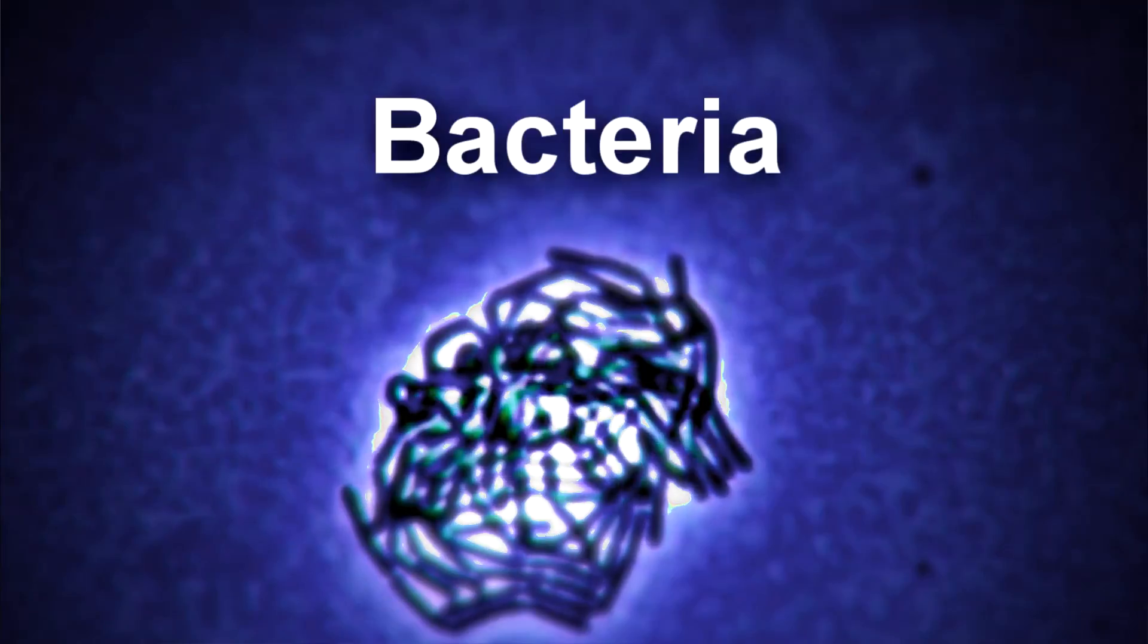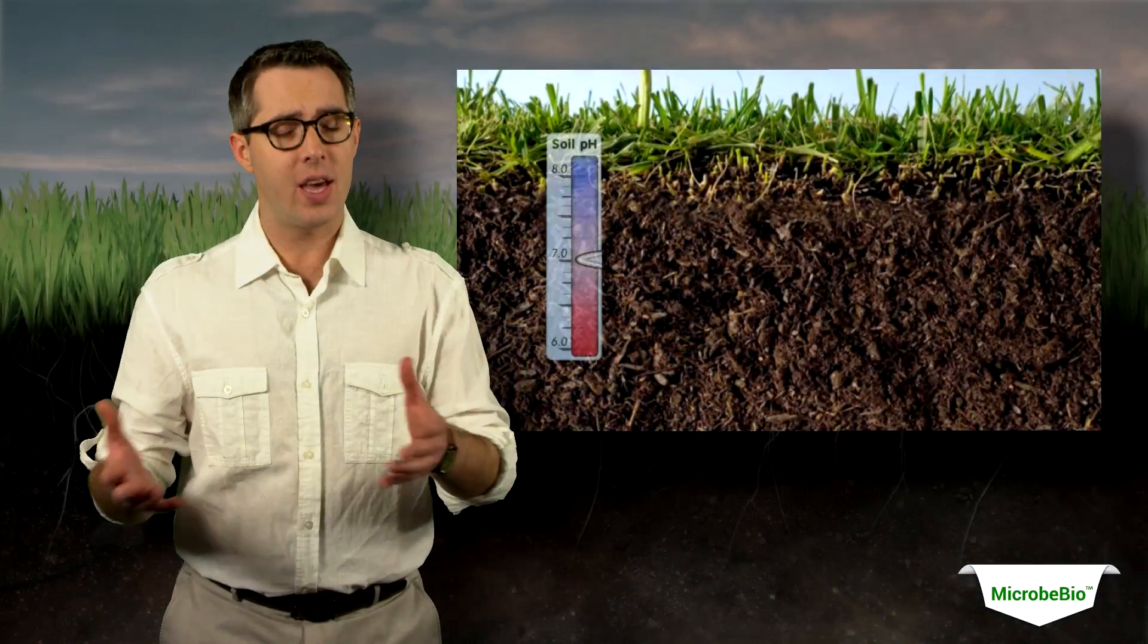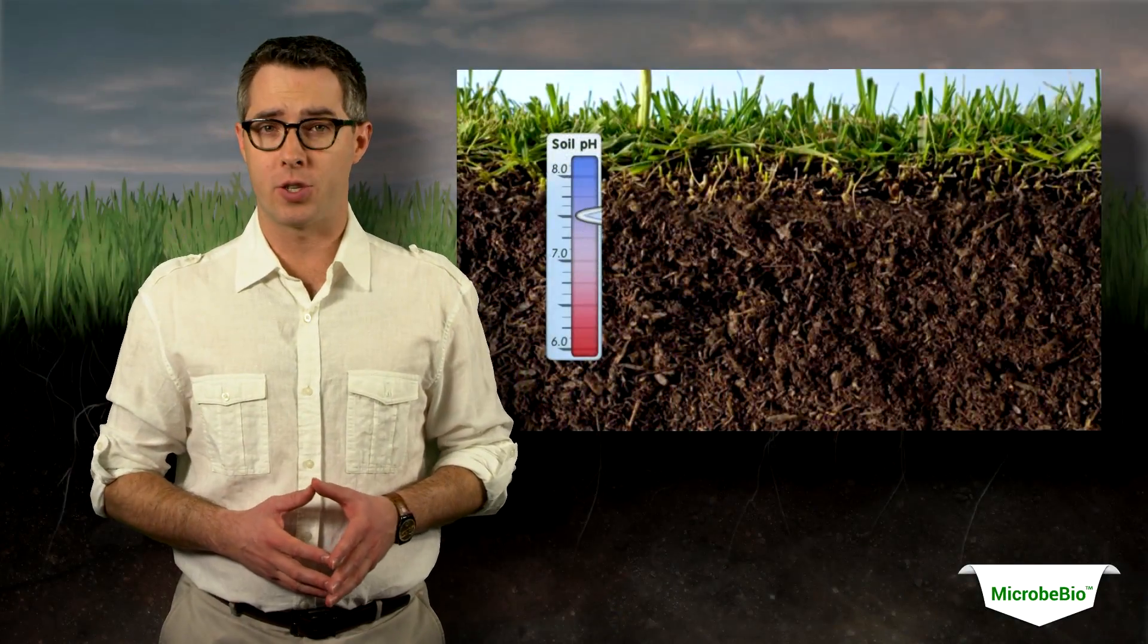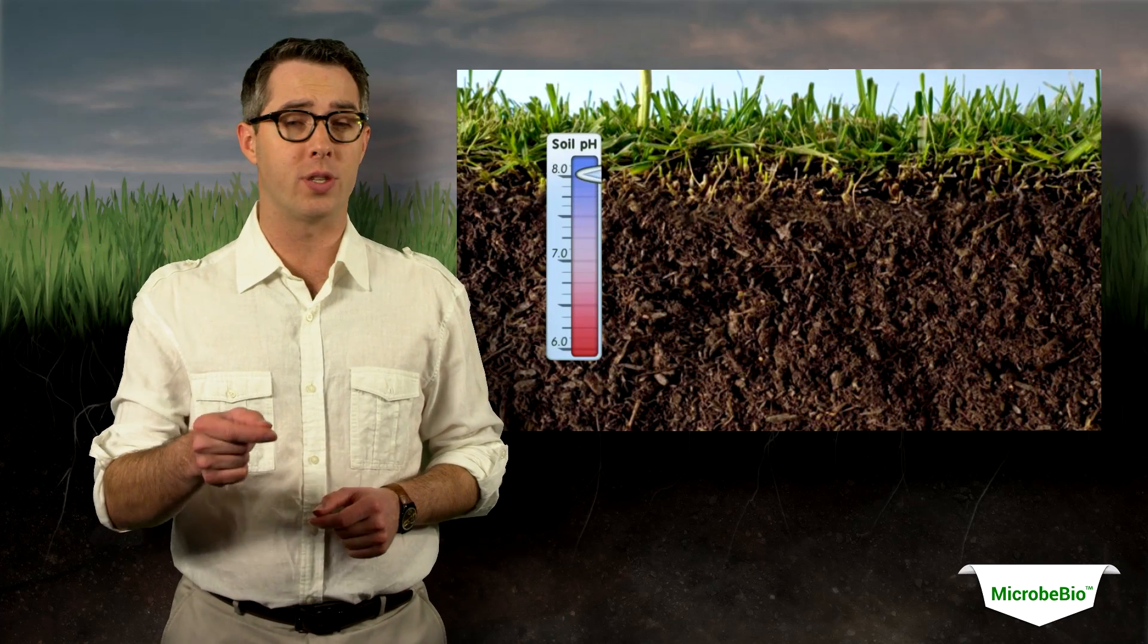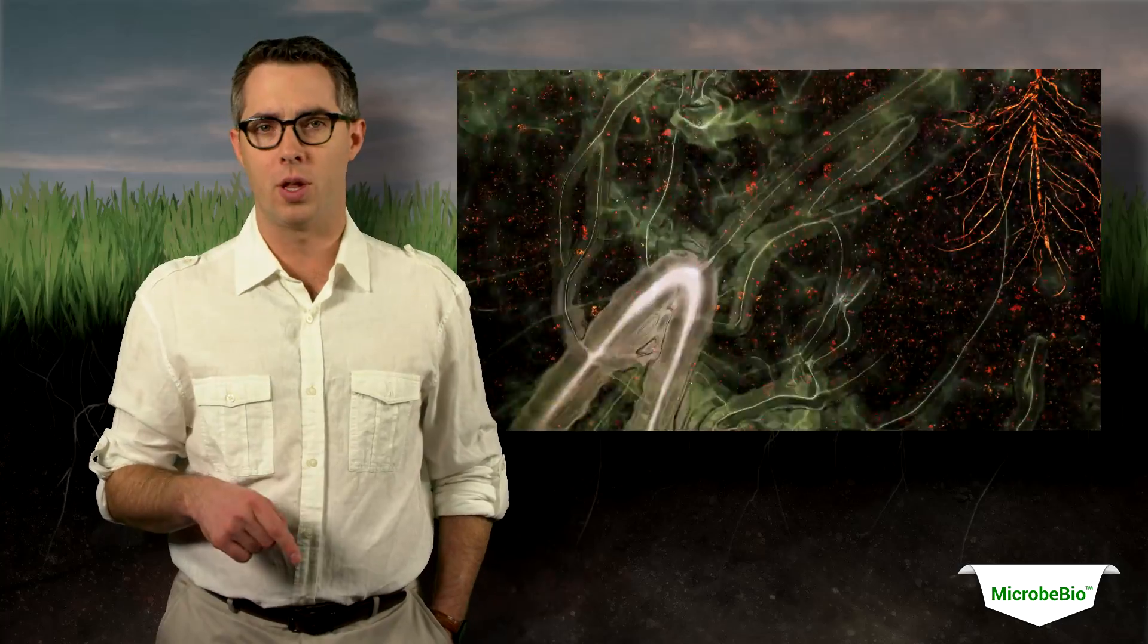So, how do you get these nutrients? Acidic soil can sometimes break these nutrients down naturally, but most of the time the bacteria and fungus in the soil have to break the nutrients free for the plant to use.